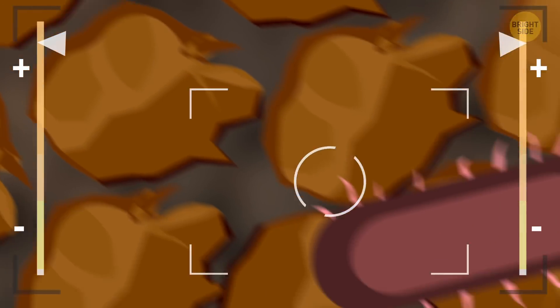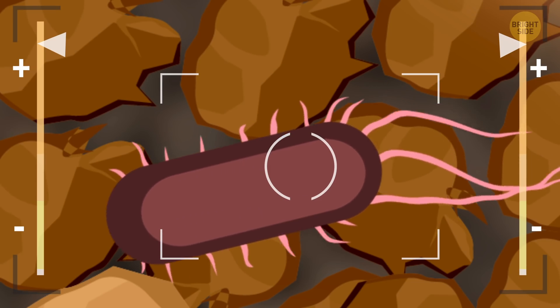E. coli, in its turn, is a bacterium that lives in your gut and produces vitamin K.